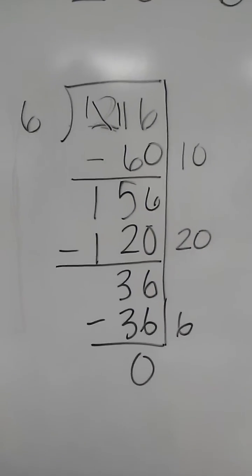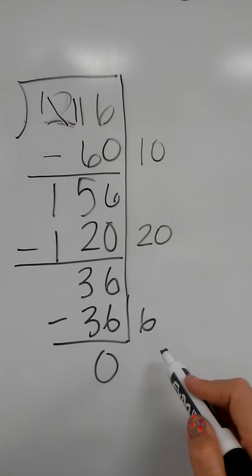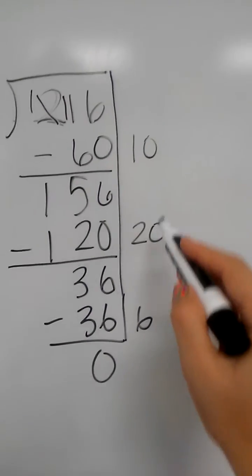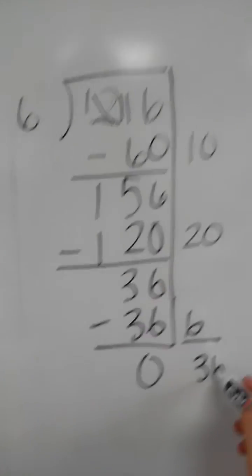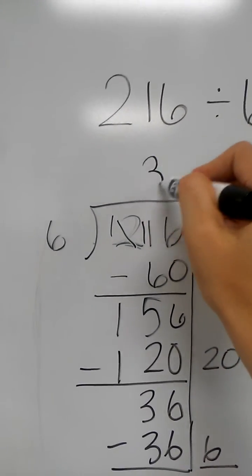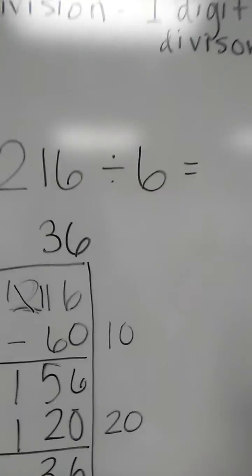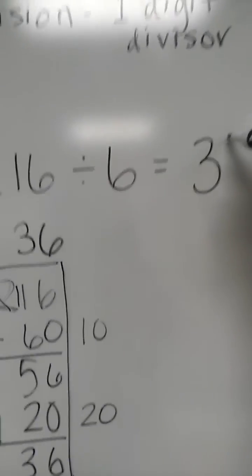They could have a remainder with this, in this case they don't. The answer is right here, it's these partial quotients, so 10 and 20 and 6 add up to 36. So 216 divided by 6 is 36.